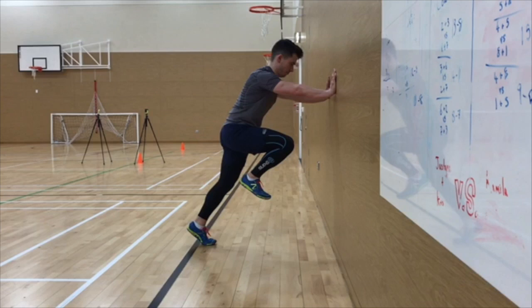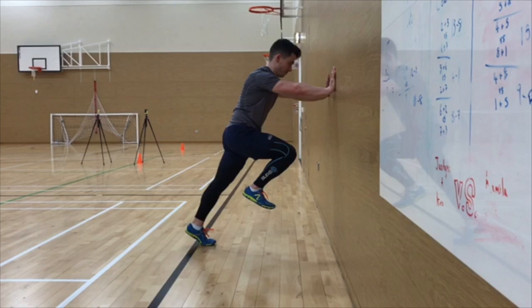To address the knee drive issue, I gave him an external cue to punch his knees up towards the sky and punch them forwards. This cue was quite effective, as we can see in the second attempt — he was able to get into a much better position with a much higher knee drive. After progressing him to three repeated actions, he was very effective in executing the skill.